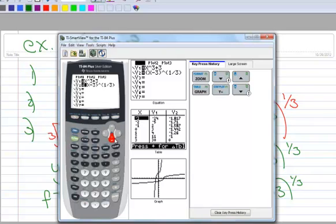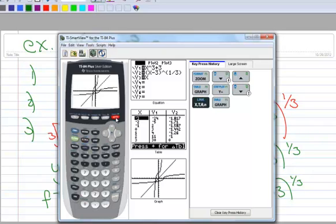and arrow down to y sub 3, type in x. Remember when we did composites as a check, we found that when we compose a function in the inverse, or the inverse in its function, we got x.